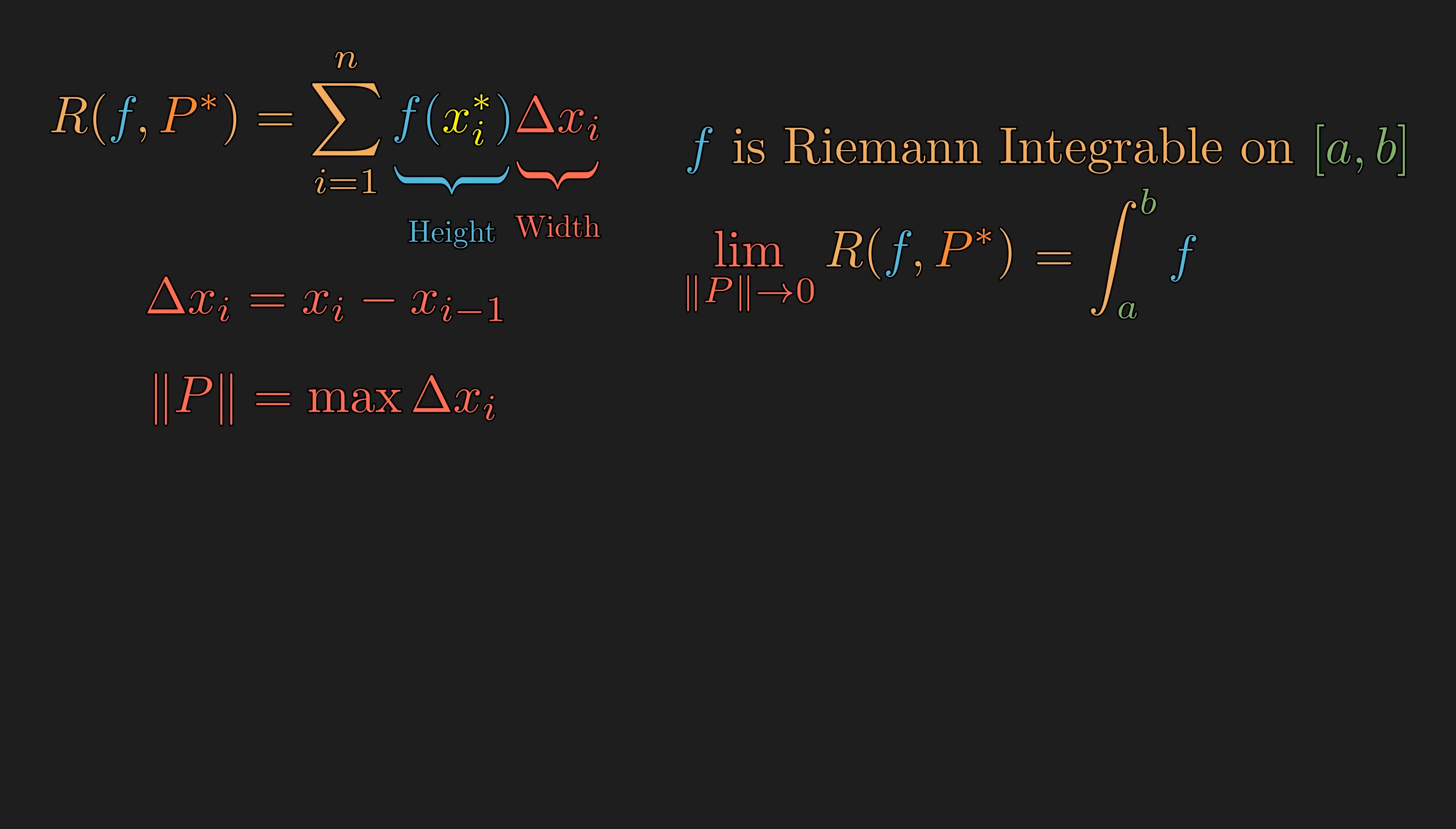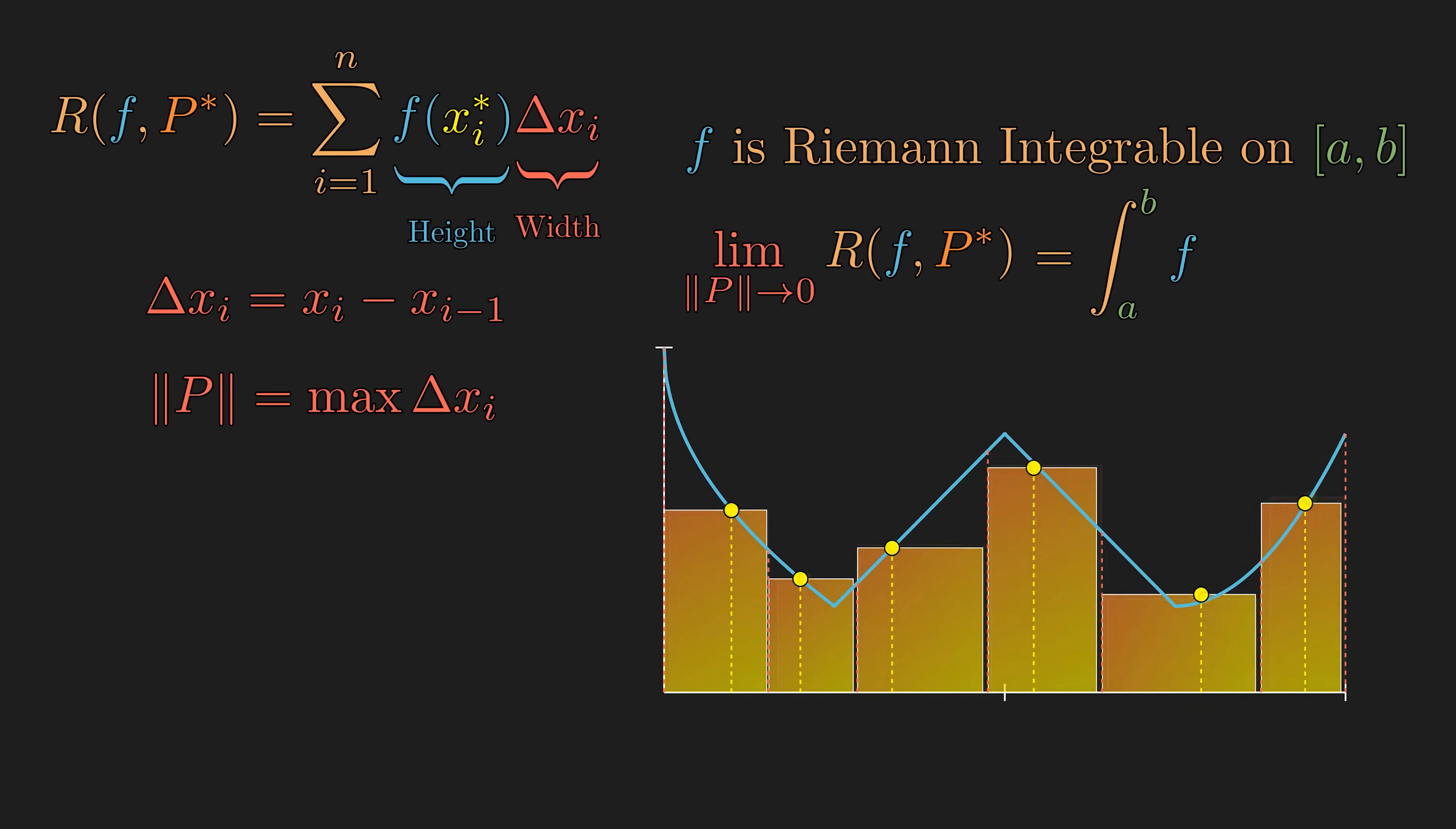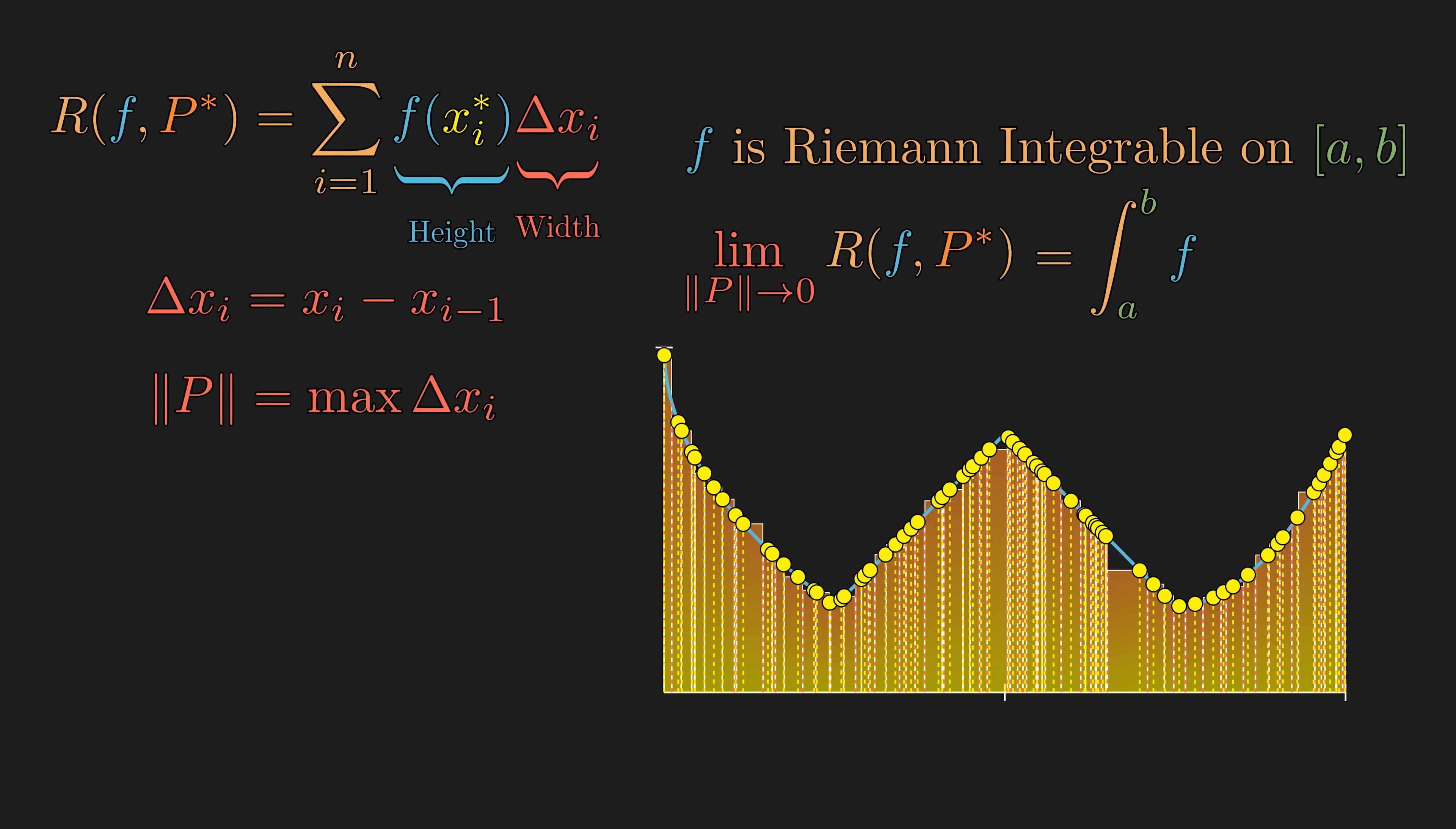To build some intuition for this definition, it says that regardless of how we partition the interval from a to b, and no matter how we sample the points, as long as the subintervals become sufficiently thin, the limit should converge to the exact area under the curve.